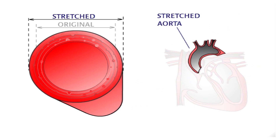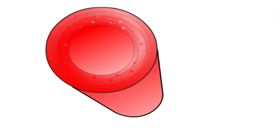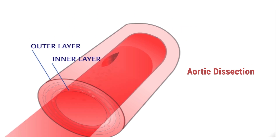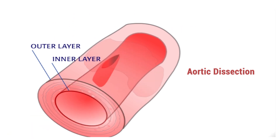In people with Marfan syndrome, microfibrils do not help elastic fibers spring back. The aorta gets stretched out over time. As it widens, the aorta weakens. This creates a risk for aortic dissection — a tear in the vessel's inner section.